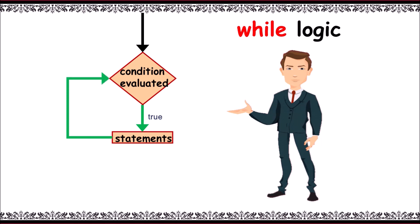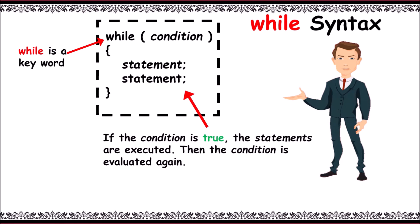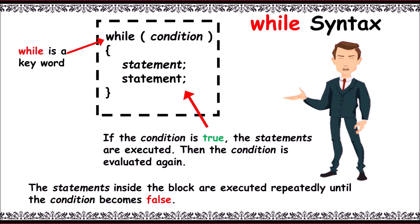If the condition is false, control comes out of the loop. Now the while statement syntax be like this: here while is a keyword placed at the beginning and condition in brackets. If the condition is true, the statements inside the block gets executed and condition is evaluated again. The statements inside the block are executed repeatedly until the condition is false.